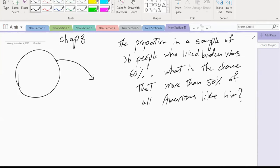So in this question, first of all, let's think about what we know. Do we know what proportion of the people in the United States liked Biden? No, we only know the proportion in a sample of 36 people. We don't know that. Do we know how many people are in the sample? Yes, 36.